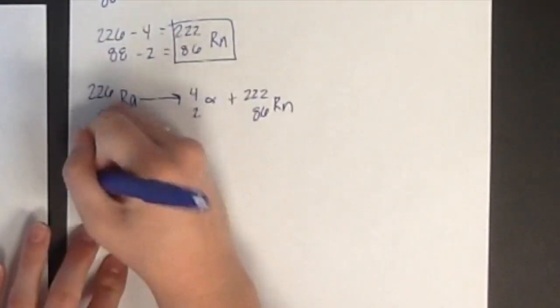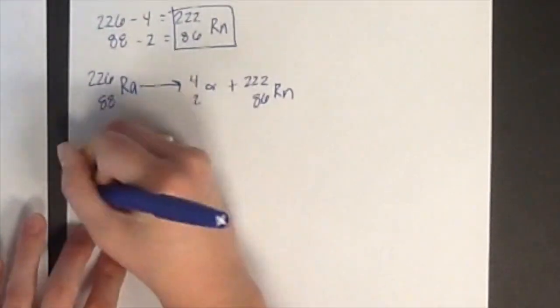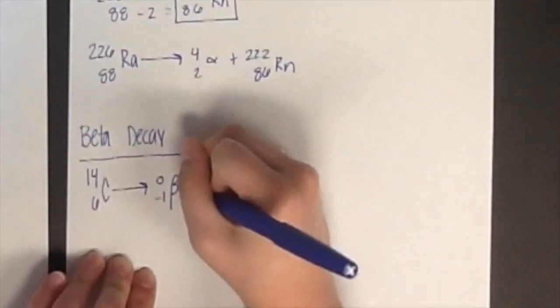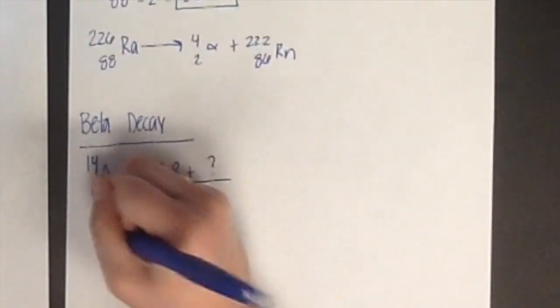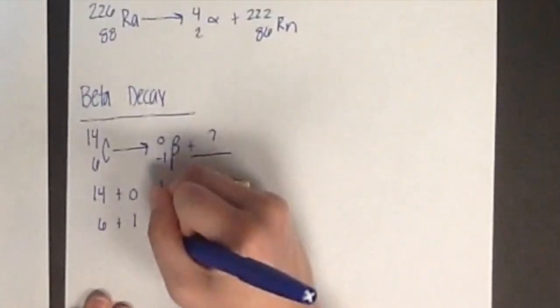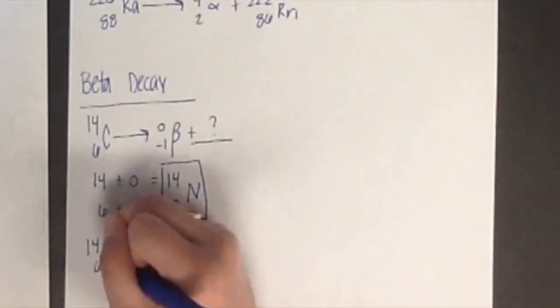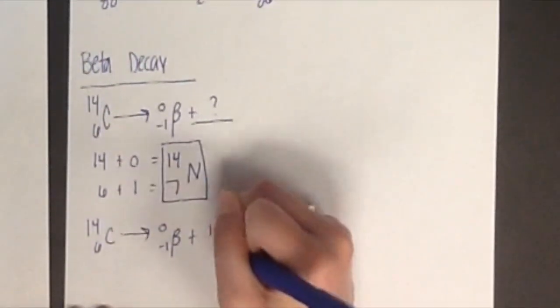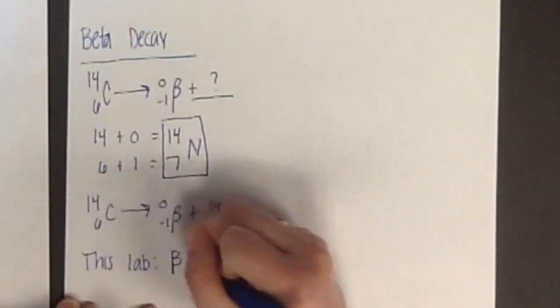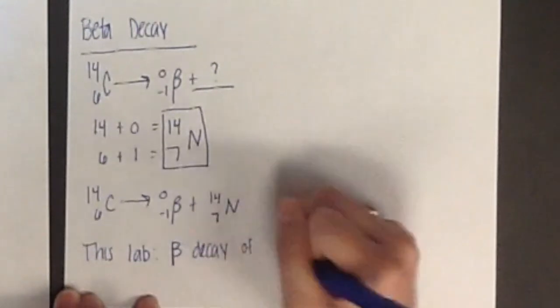An example of beta decay of carbon-14 is represented by the nuclear equation C goes to beta plus N. In beta decay, the atomic number increases by 1, and the mass number stays the same. Therefore, the mass number stays 14, and the atomic number is 6 plus 1, which is 7, which is nitrogen on the periodic table.